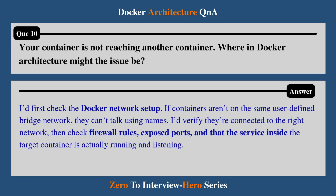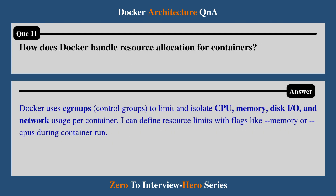Question 10: Your container is not reaching another container. Where in Docker architecture might the issue be? I would first check the Docker network setup — if containers aren't on the same user-defined bridge network, they can't communicate using names. I would verify they are connected to the right network, then check firewall rules, exposed ports, and that the service inside the target container is actually running and listening.